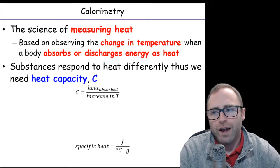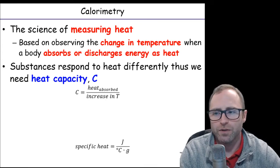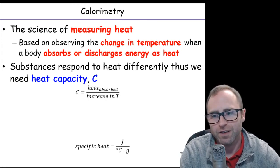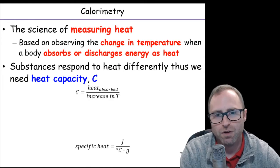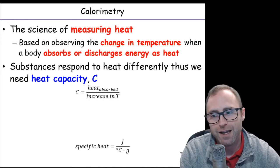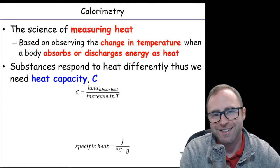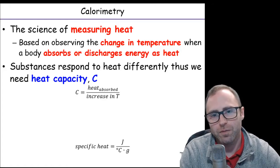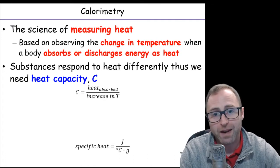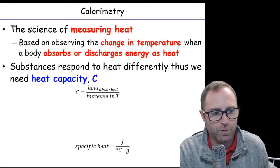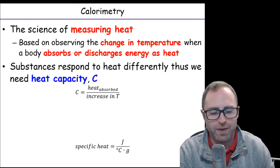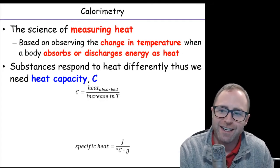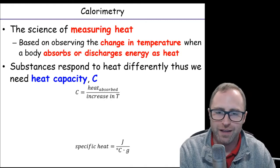So a substance is going to respond to heat differently based off of just some intrinsic property or some properties of the material itself. And we're going to call that specific thing the heat capacity. So heat capacity is a term that you may not know mathematically what it means, but you know in a real world sense what it means. So mathematically, we're going to say that C is the heat absorbed divided by the increase in temperature.